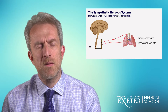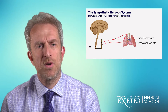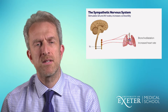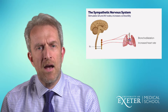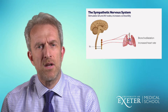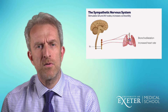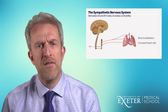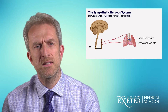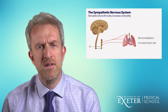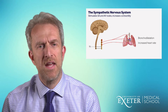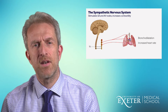The sympathetic nervous system can also be used to speed the heart rate up. Naturally, sympathetic stimulation through thoracolumbar efferents causes bronchodilation in the lungs and an increased heart rate through stimulation of the SA and AV nodes.